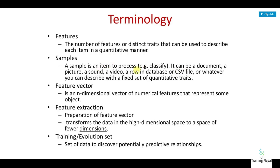A feature vector is an n-dimensional vector of numerical features that represents some object. A feature vector represents what an object looks like using its features. Feature extraction is the preparation of a feature vector — transforming data.